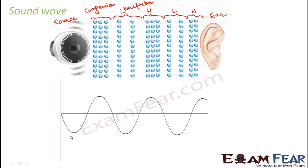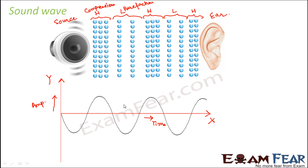When you plot it this way, you get a wave. On the x-axis we consider time, and on the y-axis we consider amplitude — this is how the variation is represented with time. You might be curious to know what amplitude is, and that is what we are going to understand now.